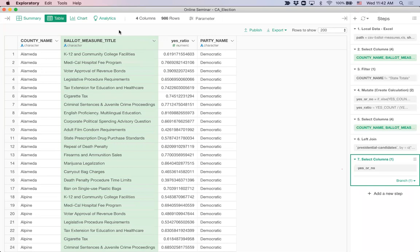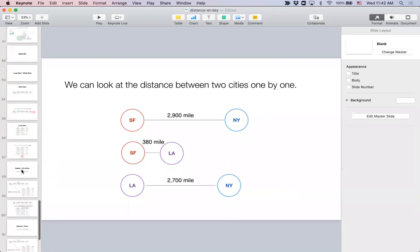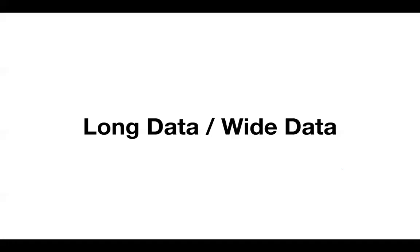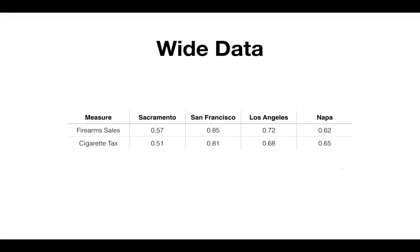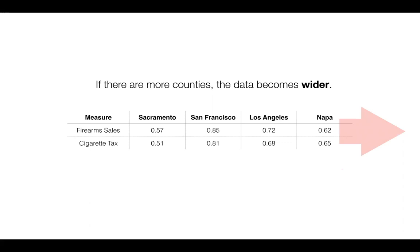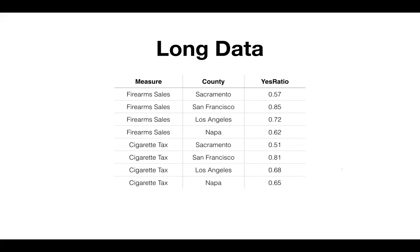Now I want to talk about one more thing — long data versus wide data, which is very useful for distance analysis too. The data we have right now is called long data. Wide data is when each county becomes a column — so if there are more counties, the data becomes wider. Long data is when the county values go down the rows — so more counties means the data gets longer.